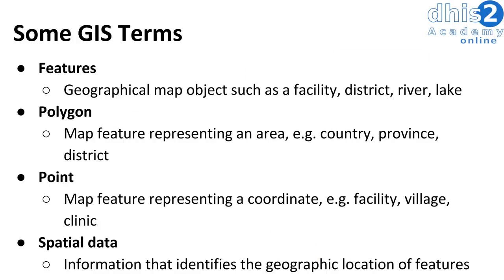Let's also introduce some GIS terms that you should become familiar with. The first term is features — these can be any of the geographical map objects, such as a facility, a district, or a river on the map. We also have polygons. Polygons are a map feature that represent an area — for example, your administrative boundaries of your country, provinces, or districts.